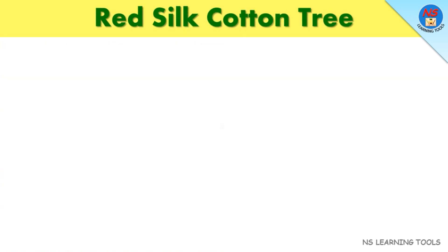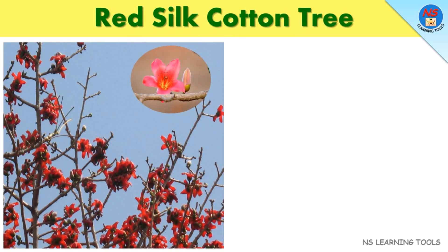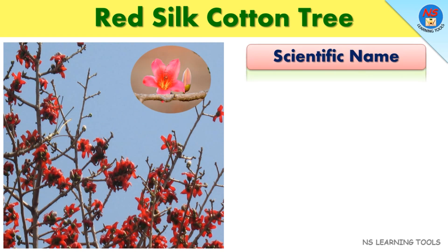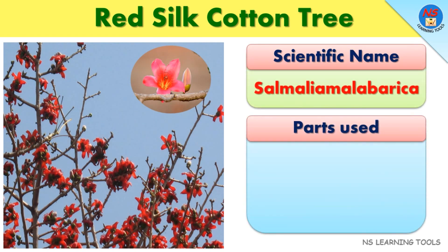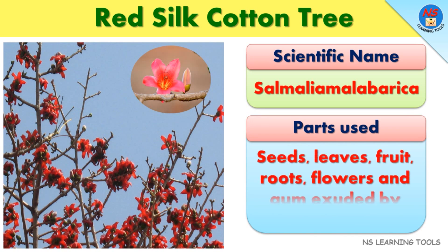Red silk cotton tree. Scientific name: Sommalia malabarica. Parts used: Seeds, leaves, fruit, roots, flowers and gum exuded by the stem bark.